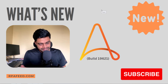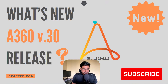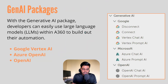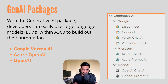The first feature is Gen AI packages. With this new release, you will have the ability to use Google, Microsoft, and OpenAI packages built in directly in A360. As you can see on my screen, there's a list of actions available under Google, Microsoft, and OpenAI packages.